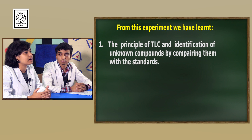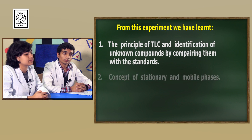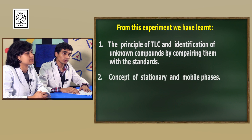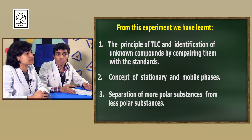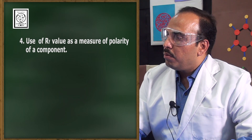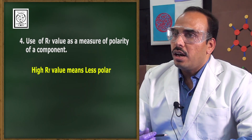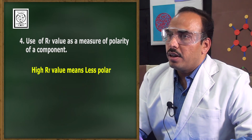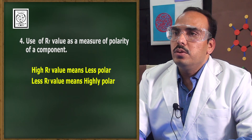From today's experiment, we have learned the principle of TLC, and we can identify unknown compounds by comparing them with standards. We have also learned the concept of stationary and mobile phases, and that through this technique we can separate more polar substances from less polar substances. We learned that the RF value is a measure of polarity: a higher RF value indicates a relatively less polar compound, while a lower RF value indicates a highly polar compound. This is how we perform the experiment called thin layer chromatography. Thank you, goodbye.